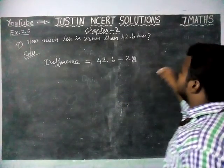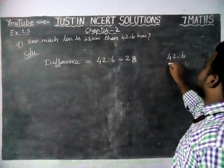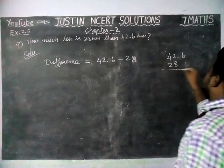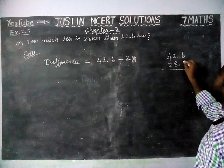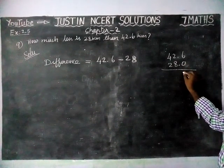42.6, 28. And this is the whole part. So now, we are making it 0. 6 minus 0 is equal to 6.